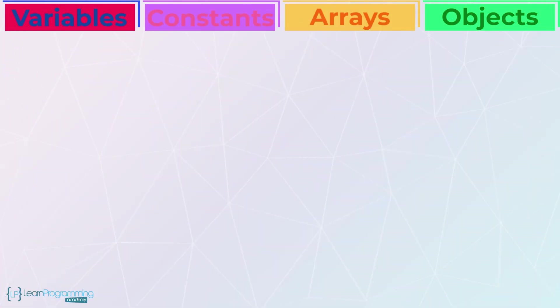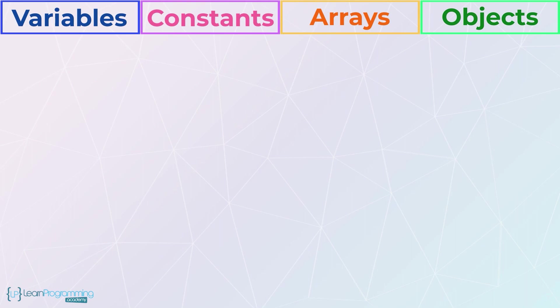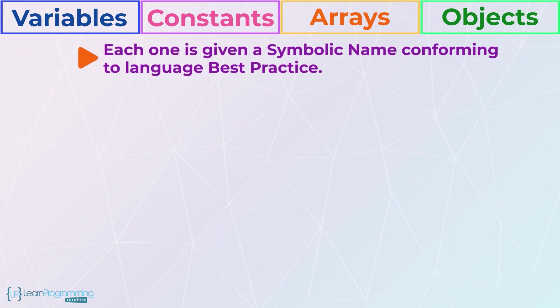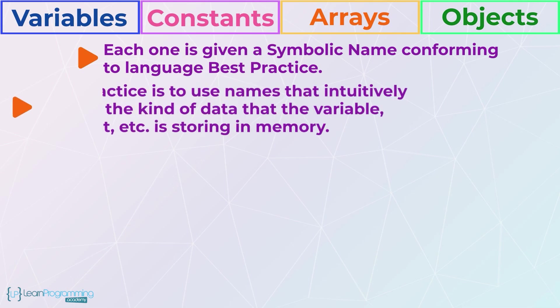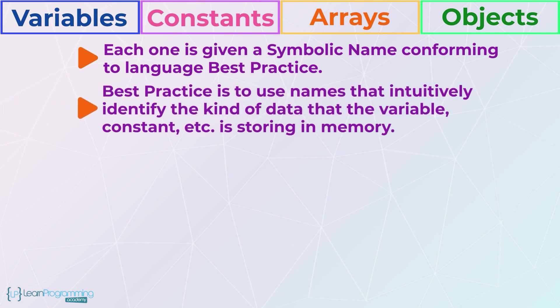Each variable constant etc. that the programmer uses is given a symbolic name in the program and that name should conform to best practice for the specific programming language being used. A generic best practice for names is to use names that intuitively identify the kind of data that the variable constant etc. is storing in memory.